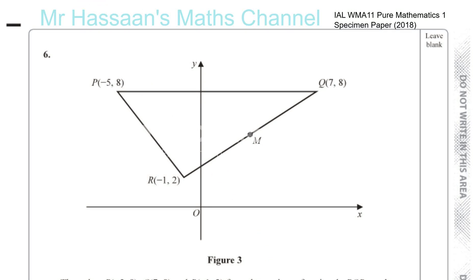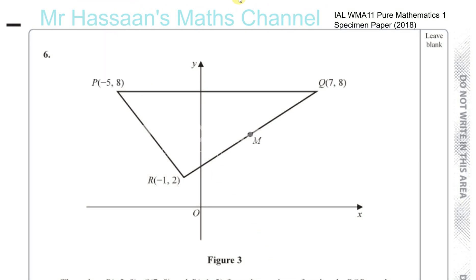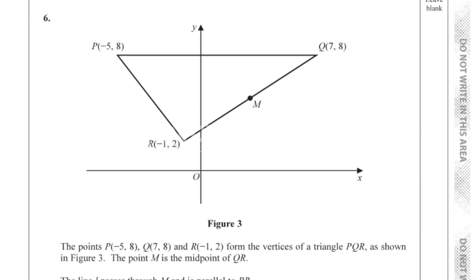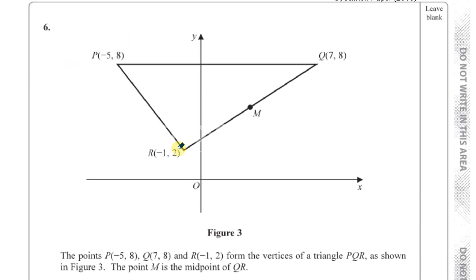Now we have question number 6 from the specimen paper P1 — a question about straight line graphs. We're told about three points P, Q and R, which form the vertices of a triangle PQR as shown in the figure.